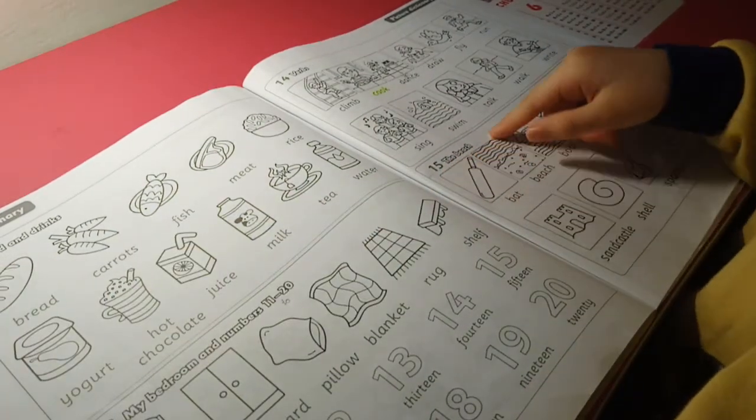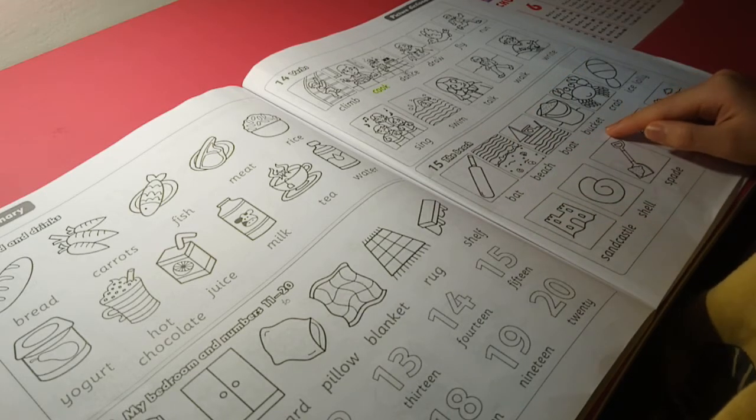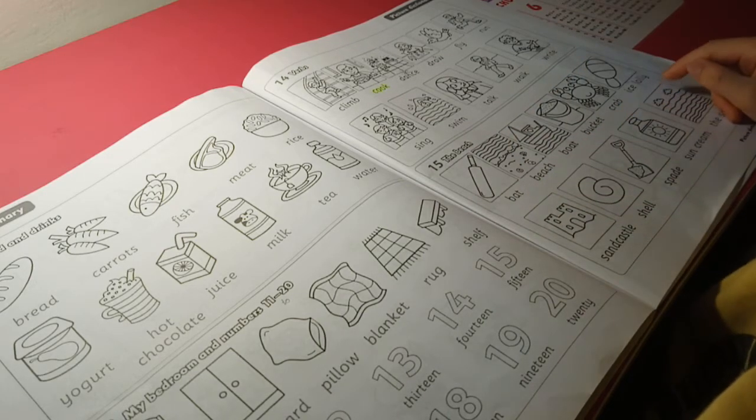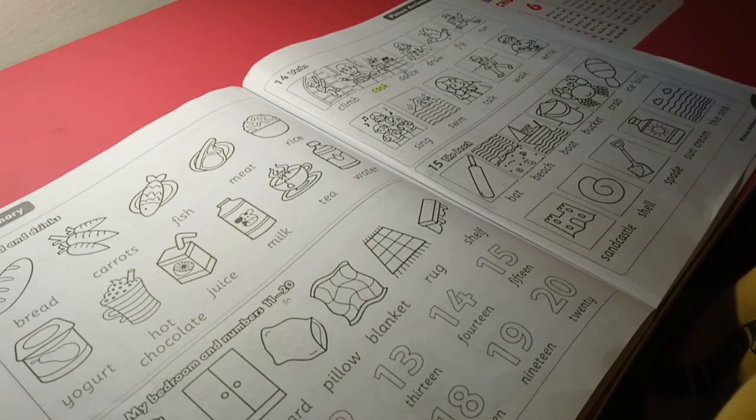Fifteen. The beach. Bat, beach, boat, bucket, crab, jellyfish, sandcastle, sail, spade, sunscreen, the sea.